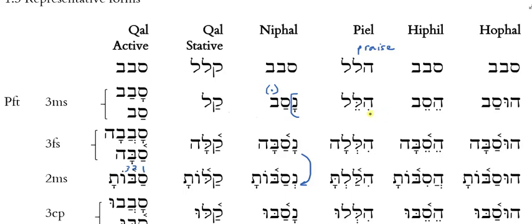Here's the deal with the Piel of geminate verbs. When they follow the normal Piel pattern, they are very regular, so you don't see this monosyllabicizing going on. There are some other patterns that geminate verbs follow when they want to form a Piel — they will also often follow a minor stem pattern called the Po'el and the Po'al. But we won't worry about that right now.